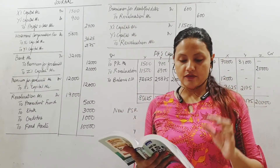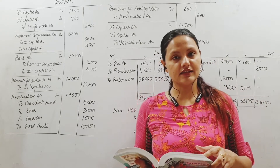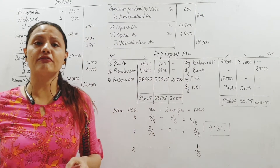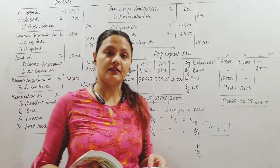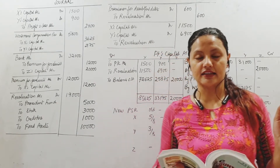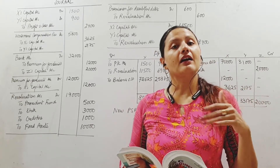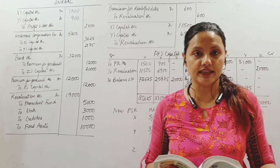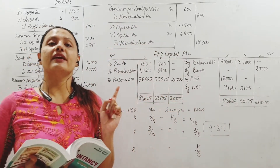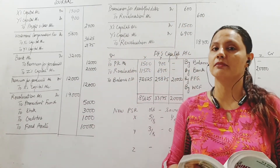On the liability side, we see creditors — no adjustment required right now. Then provident fund. Don't go by the word 'fund' only. It is not like a reserve fund or accumulated profit of the firm. It is an external liability. Provident fund is supposed to be paid to the employees when they retire. Therefore, it is to be treated as an external liability, not to be distributed among the partners.